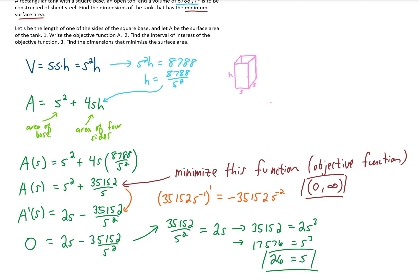I'm going to box that up because that gives us most of our answer. Because the dimensions that minimize the surface area are 26 feet by 26 feet. Those are the two dimensions in the base of that tank.